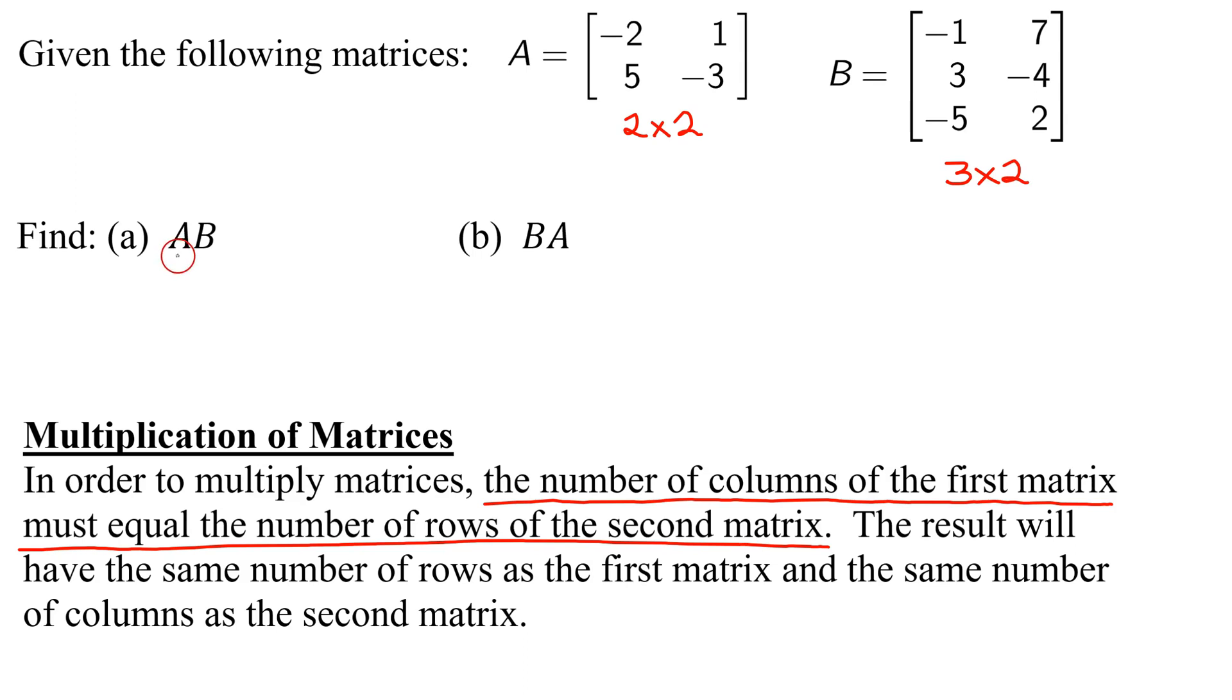Now, can I multiply A times B? Remember, A is a two by two, B is a three by two. To be able to multiply them, the columns of the first have to equal the rows of the second. That is not true in this case, so AB is undefined.